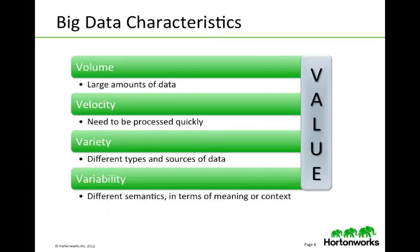Big data also has some very well-defined characteristics. Number one is volume — large and complex amounts of data. Velocity — the need to process it quickly, the ability to obtain it quickly. Variety — different types of data, so not only log files or text feeds, but audio, video, and types of data you had not previously been collecting. And then variability — the ability to understand the semantics in terms of the context or meaning of what you're analyzing.